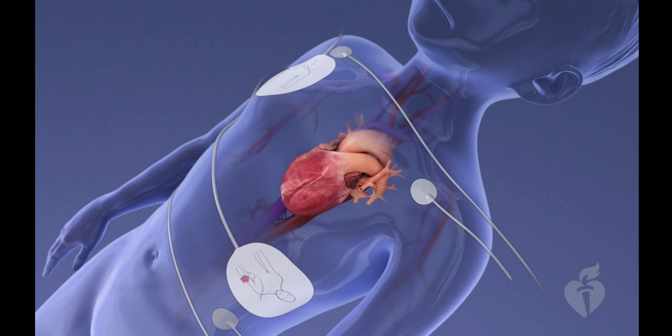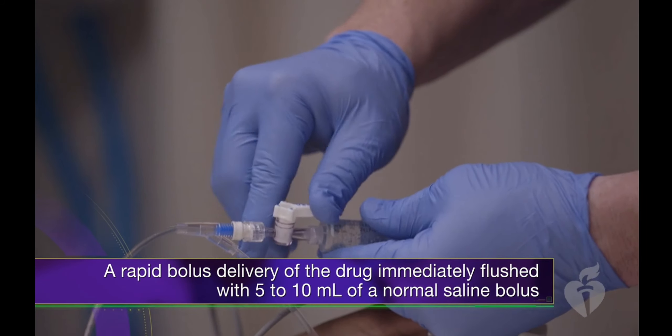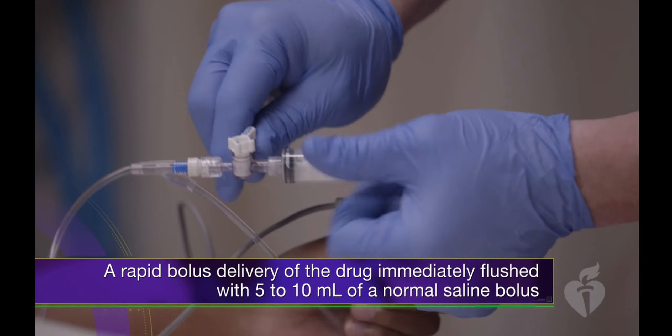Adenosine is the most common medication for pharmacologic cardioversion of SVT. It blocks conduction through the AV node for about 10 seconds. A common cause of failure is that the drug is administered too slowly or with inadequate IV flush. To enhance delivery, use a rapid flush technique: a rapid bolus of the drug flushed immediately with 5 to 10 milliliters of normal saline. A brief 10 to 15 second period of severe bradycardia or asystole may occur after effective drug action.